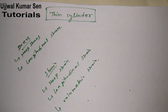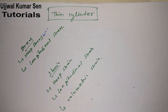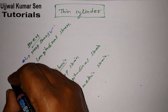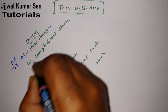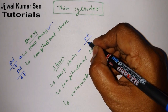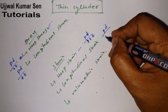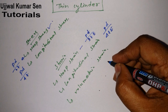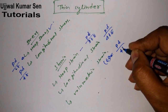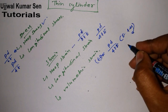The question asked in GATE was from hoop stress, so we definitely need to learn it. The formula for hoop stress is pd/2t. Longitudinal stress is pd/4t. And volumetric strain is pd/4tE multiplied by (5 - 4μ), where μ is known as Poisson's ratio.